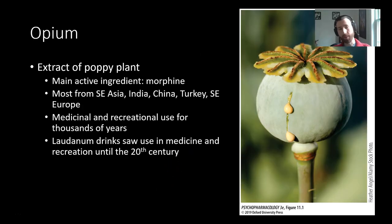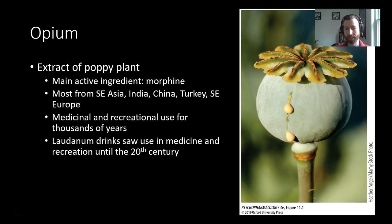Most opiates are derived from opium, which is the extract of the poppy plant, the main active ingredient of which is morphine. Most of this plant is grown in Southeast Asia, India, China, Turkey, or Southeastern Europe, and it has seen medicinal and recreational use for thousands of years.